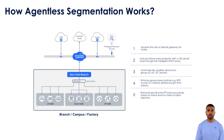Zero Trust Branch gateway auto-provisions every endpoint with a /32 subnet mask using DHCP proxy — no agents needed. Devices are automatically classified and group-based policies are enforced, for example restricting RDP to cameras. A ransomware kill switch enables rapid threat-triggered policy enforcement for incident response.